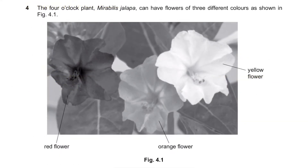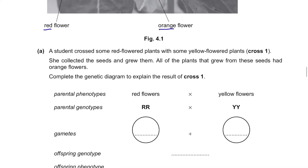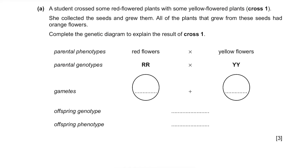The 4 o'clock plant Mirabilis jalapa can have flowers of three different colors: red, orange, and yellow. Part A. A student crossed some red flowered plants with some yellow flowered plants — cross 1. She collected the seeds and grew them. All of the plants that grew from these seeds had orange flowers. Complete the genetic diagram to explain the results of cross 1.